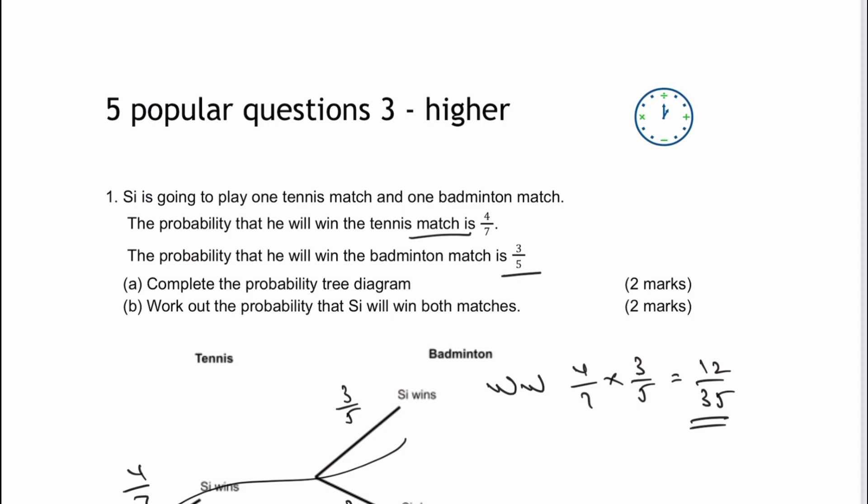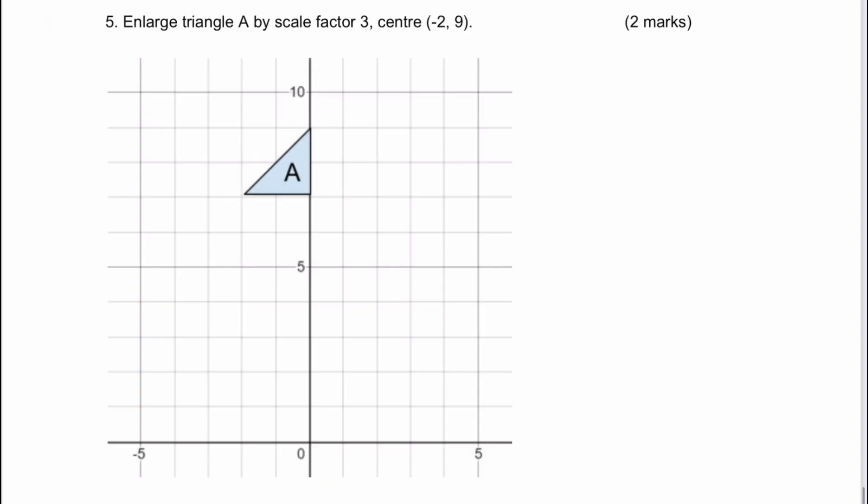In the previous video, we completed through to question number four. We're going to start from question number five. Question number five is enlarging triangle A by scale factor three and importantly, the center is minus two, nine. So that's actually going to be this point here.